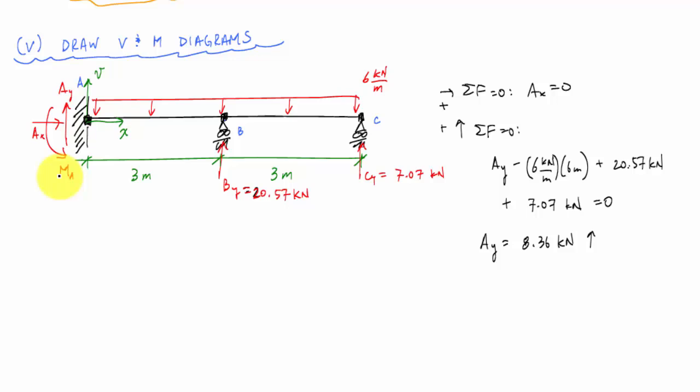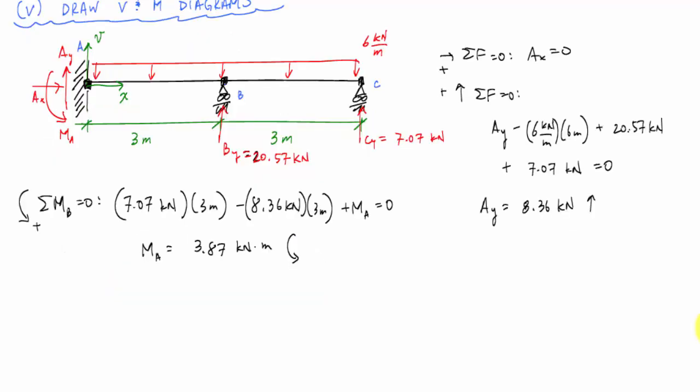And to get the moment reaction here, I'm going to take moments about B because the resultant of this distributed load is right at the middle, so I can ignore it. So here, sum of moments about B equal to zero plus Ma equal to zero, and that just tells me Ma is equal to 3.87 kilonewton meters going in this direction. So here are my reactions.